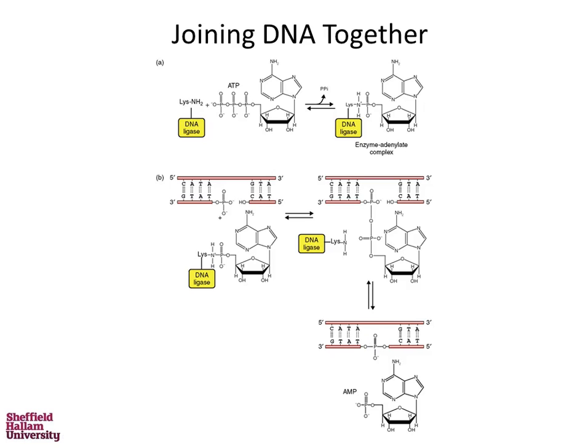When we're working with DNA and plasmids, we take the gene of interest and cut it, take the plasmid and cut that, giving ends that are complementary or compatible with each other, and then we stick them together with DNA ligase.